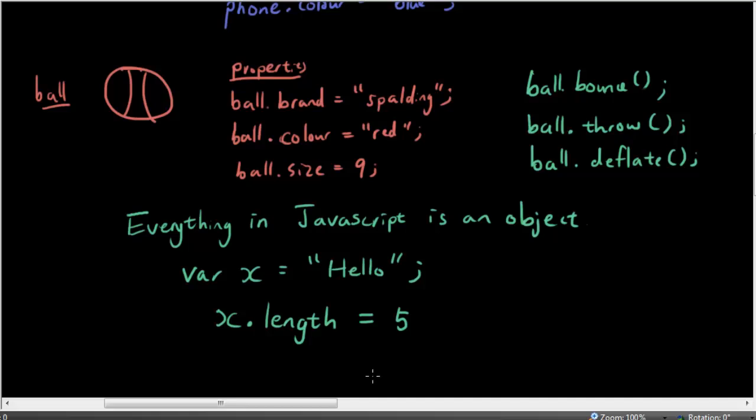So if I, for example, want to show this on the screen, and I type in something like alert, which is a function, and I display this on the screen, it'll show 5 on the screen. So x.length refers to a property. So this is a property.